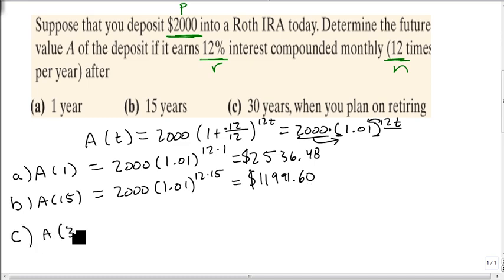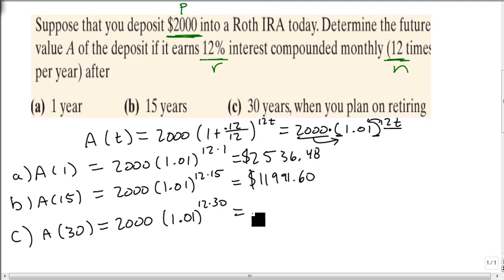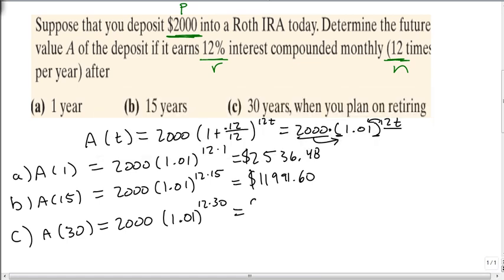The last one, A of 30, if we sit on it for 30 years, we get 12 times 30 up top. So we're going to get 2,000 times 1.01 raised to the 12 times 30, close parentheses, equals. And we'll have $71,899.28.